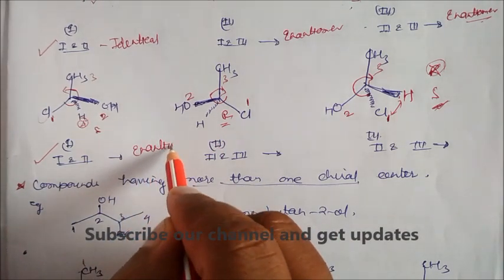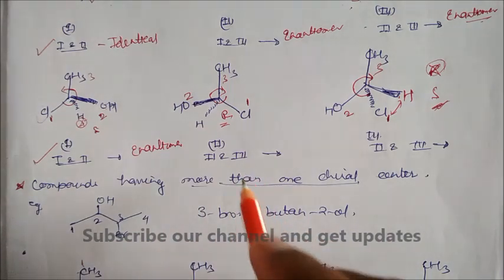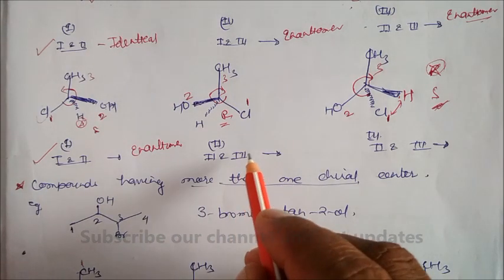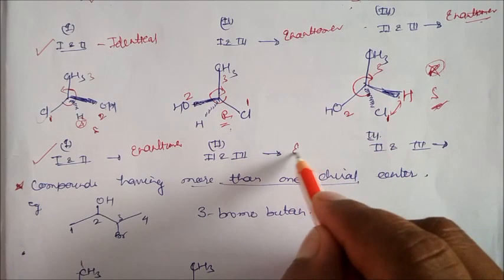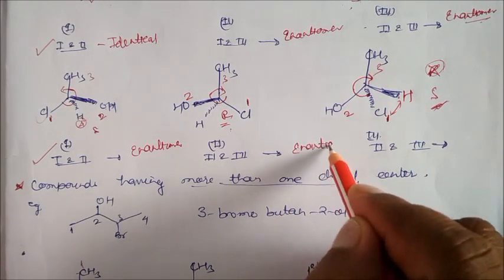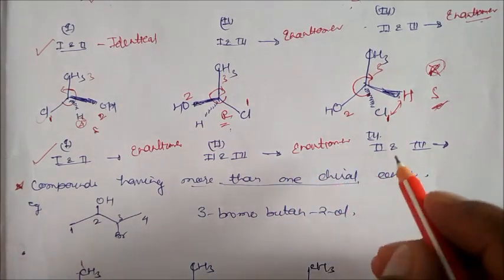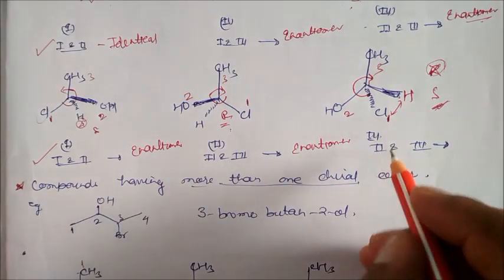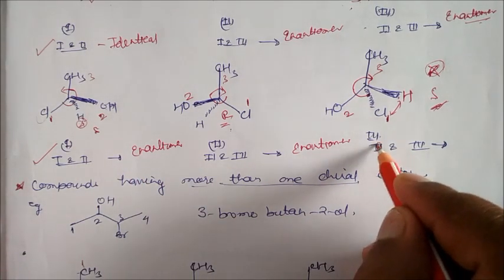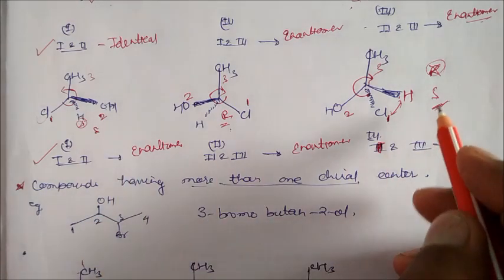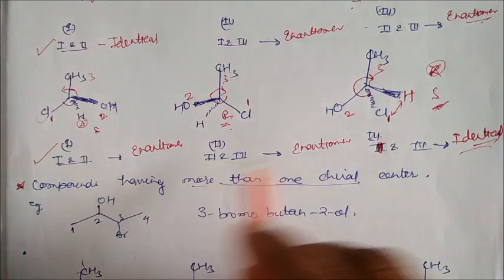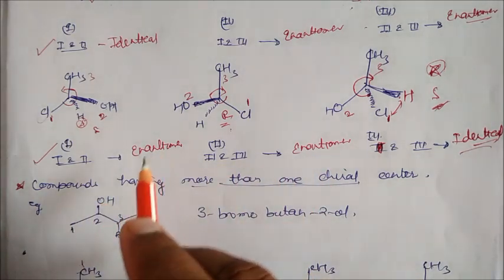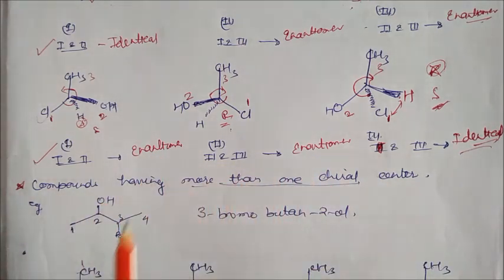And 2 and 3 — if you see 2 and 3: 2 is R, this is S — this is again enantiomer. And if you take 1 and 3: 1 is S and this is again S, so this will be your identical. So I hope you understood what is the difference between identical, enantiomer, and diastereomer. We will see one more example of diastereomers.